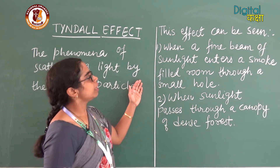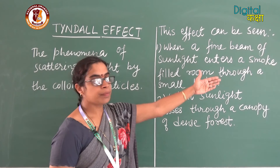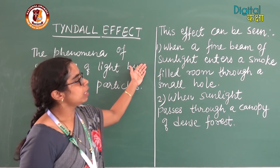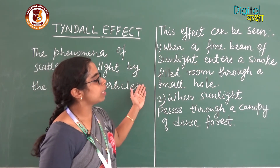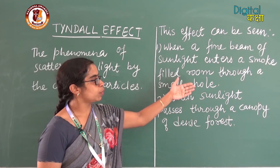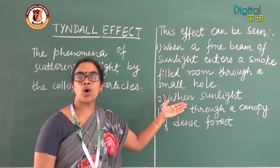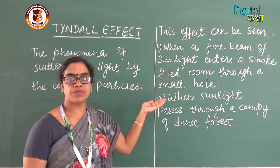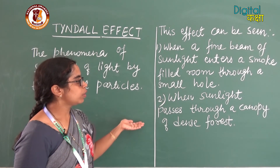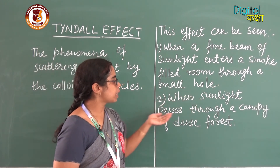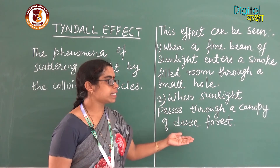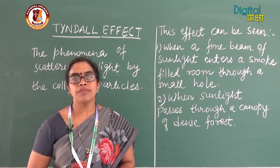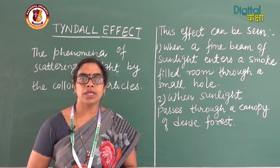The Tyndall effect can also be observed in two common examples. First, when a fine beam of sunlight enters a smoke-filled room through a small hole, we can observe the Tyndall effect. Second, when sunlight passes through a canopy of a dense forest, the Tyndall effect can also be observed in that case.